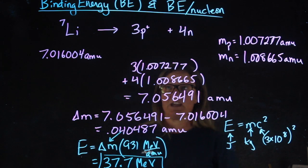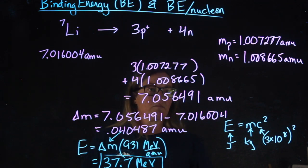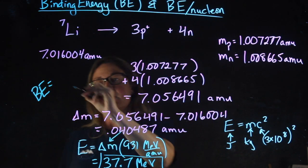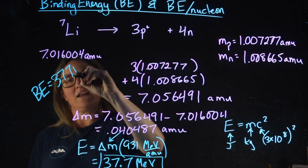This is the binding energy for lithium-7. So for lithium-7, we write BE equals 37.7 MeV.